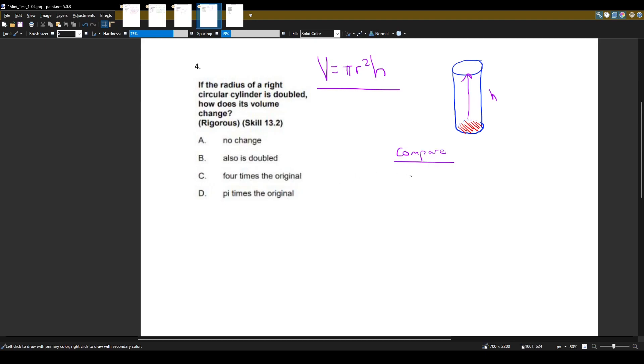Here's the original. Volume is equal to pi r squared h. We did not do anything to the radius.